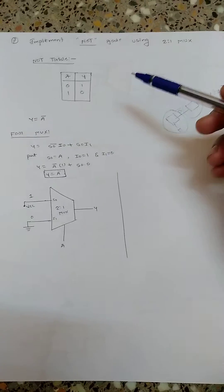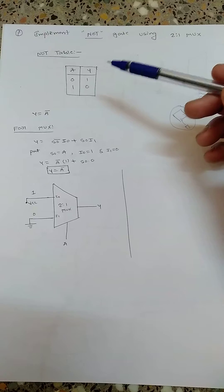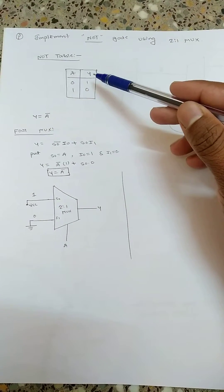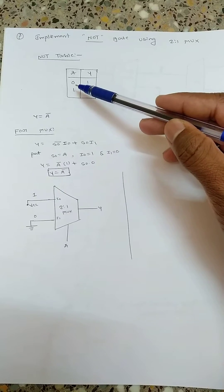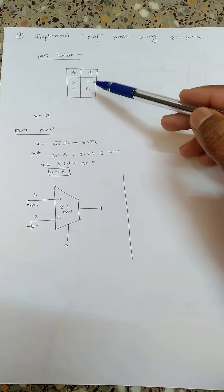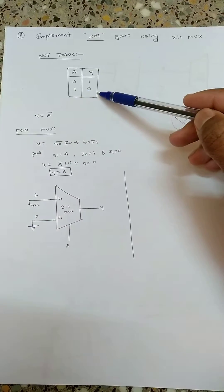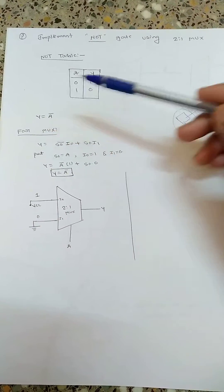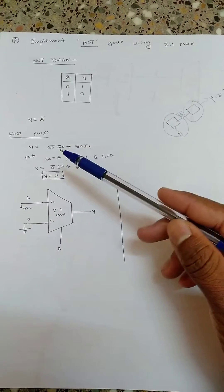Now, first we will look at the NOT gate truth table. NOT has A as input and Y as output. Whenever the input is 0, the complement will be the output — this is basic. Whenever A is 1, the output will be 0. So the output equation is y equal to A-bar.